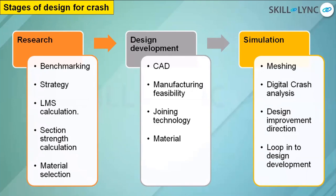The design development is where you make the CAD and consider manufacturing feasibility — the joining technology: how do you weld it? Are you going to bolt it, use laser welding, riveting, spot weld, MIG weld, MAG weld, TIG weld? What material are you choosing — cold roll steel, hot roll steel, magnesium, hot roll steel for high deep draw capability, higher elongation, lower yield ratio, high tensile strength material? Those go into design development. But before that, we always do the research section.